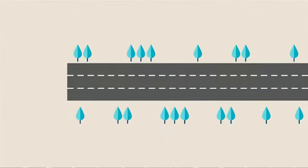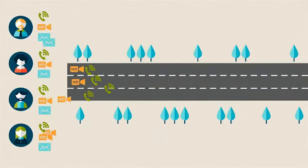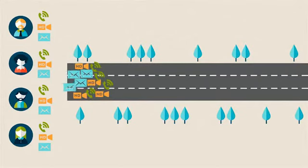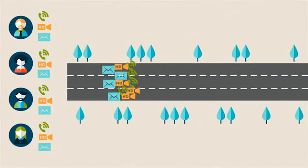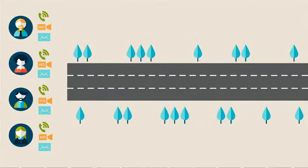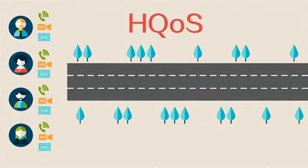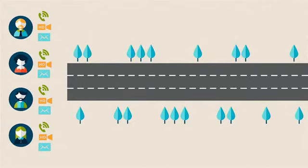Next, the switch encounters the bandwidth allocation problem. S5720HI uses the innovative Hierarchical QoS feature to resolve this problem.